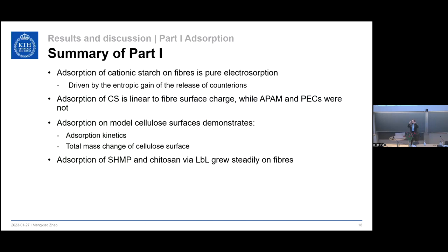Summary of Part One: adsorption of cationic starch is pure electrosorption driven by entropy gain from the release of counter-ions, and it is linear to the surface charge of the pulp fibers, while APAM and PEX are independent from the initial fiber surface charge. QCM-D results demonstrated adsorption kinetics and total mass changes of the cellulose surface with polyelectrolytes. Adsorption of fire retardant chemicals grows steadily onto the fibers.